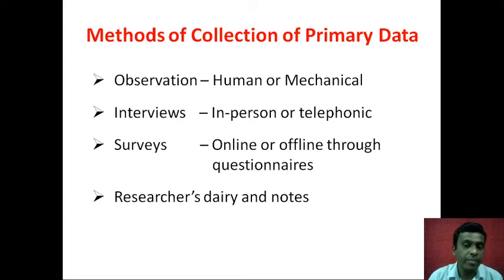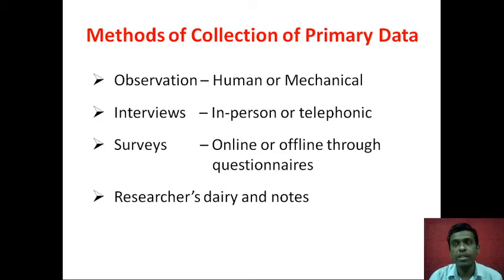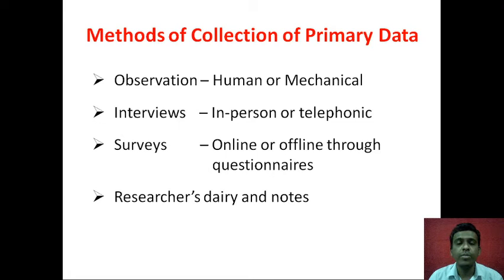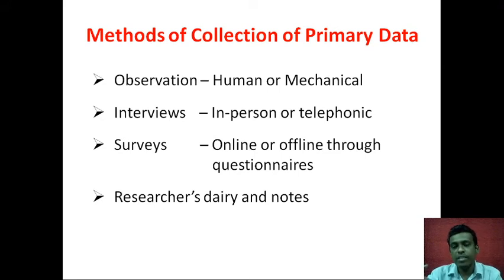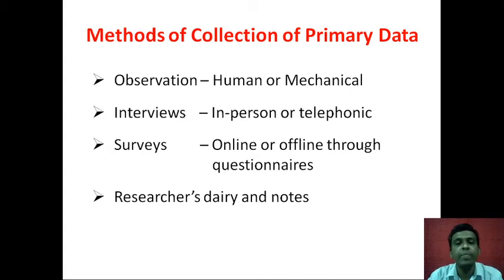Mechanical observation uses devices such as CCTV cameras, optical scanners, laser beams, or counting machines. For example, CCTV cameras record video that is stored on a hard drive. A counting machine uses a laser beam at the entry and exit of a mall — each time a person enters and cuts the beam, it is automatically counted as one. Three people entering one by one will be counted as three. This is a mechanical way of observation.